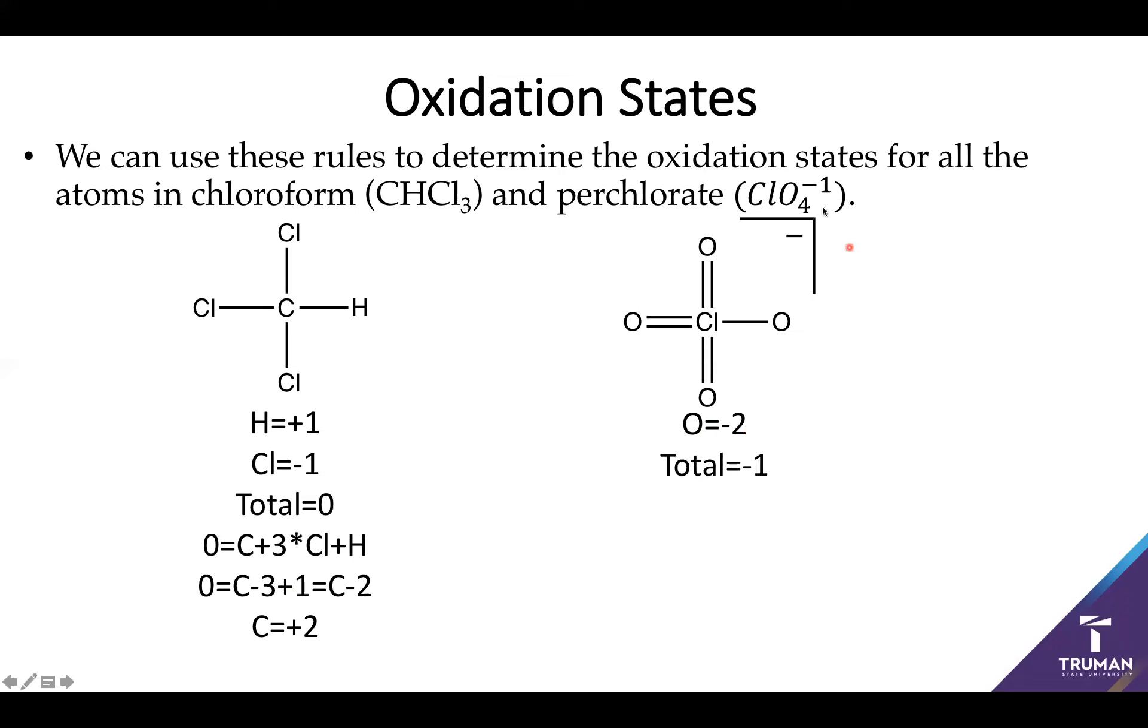Now we have to go ahead and use this same basic formula. Everybody added up has to be equal minus one. We know that oxygen is four. Oxygen is minus two. So what we have is minus one equals chlorine minus eight. Rearrange this guy. And chlorine has to have an oxidation state of seven.